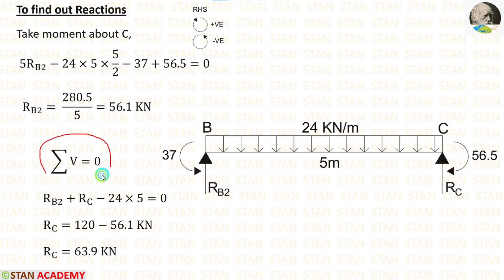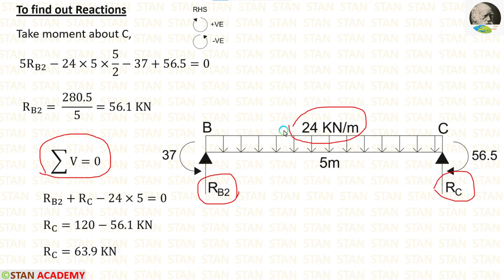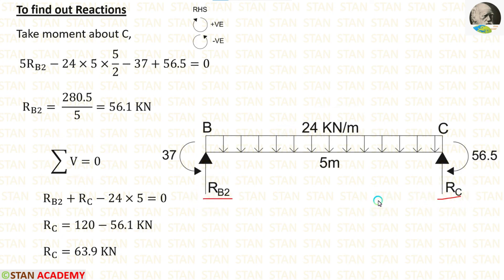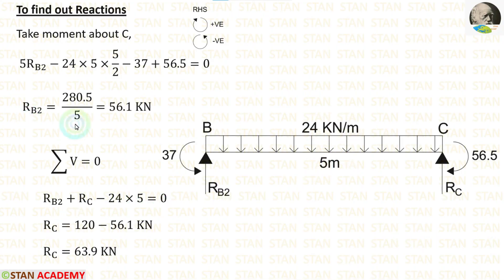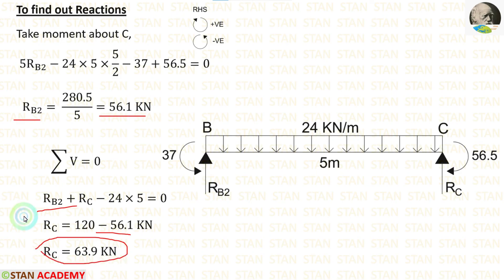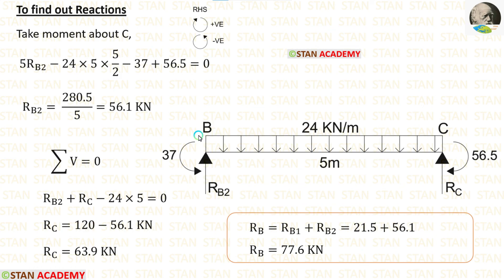Now let us apply summation of vertical forces equals 0. In this span there are three forces: RB2, RC, and the UDL of 24 kN per meter. RB2 and RC are acting upward — both positive. The UDL is acting downwards — negative — and we multiply by the distance to get the total load. We have already calculated RB2, so applying the value we get RC equal to 63.9 kN. Adding RB1 and RB2 gives us RB equal to 77.6 kN.